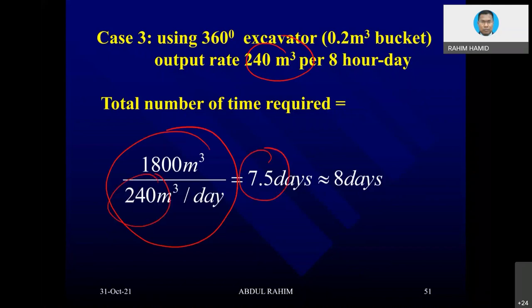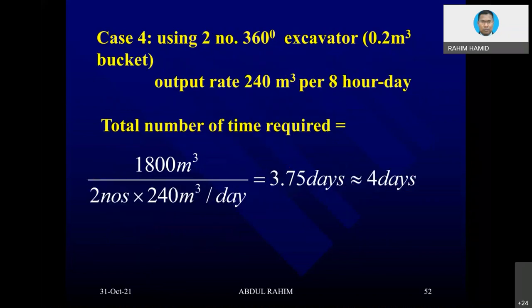Instead of using manpower, we can replace with a machine. One excavator with a 0.2 cubic meter bucket size has an output capacity of 200 cubic meters per day, so 1,800 divided by 240 gives 7.5 days — we round up to 8 days in scheduling. Using machinery might be a little expensive but if you reduce the time, those costs are compensated. Using two excavators instead of one reduces from 8 days to 4 days.